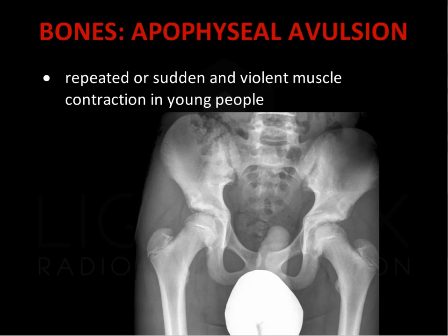In adolescence, strong muscle contraction can result in avulsion of the apophysis from which the muscles insert. This most commonly occurs at the ischial tuberosity associated with hamstring tendon insertion, and the anterior inferior iliac spine associated with the rectus femoris muscle. In this case, there is apophyseal avulsion from the left anterior inferior iliac spine.